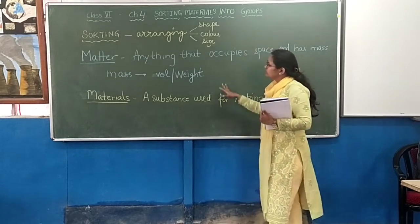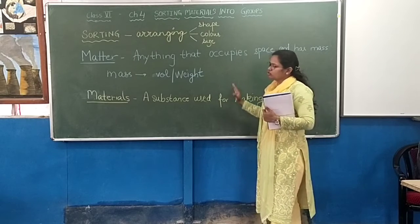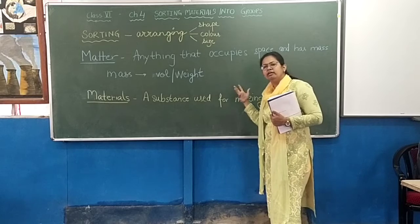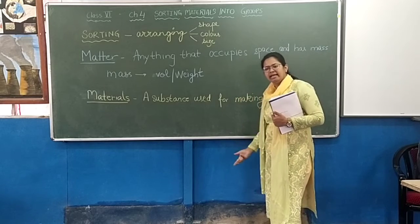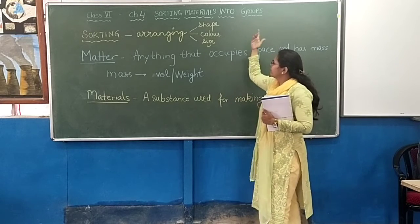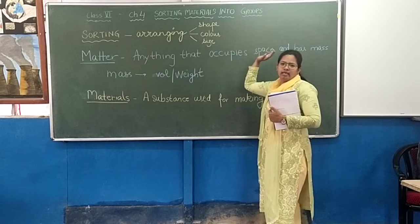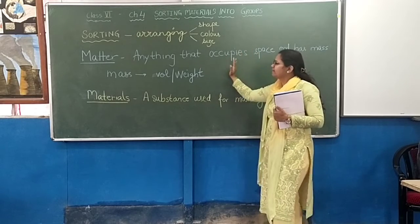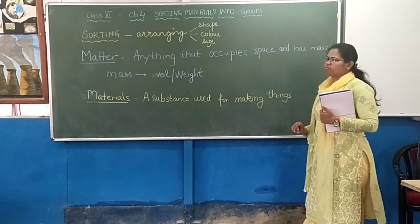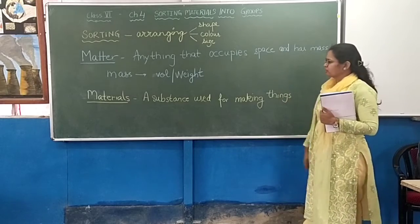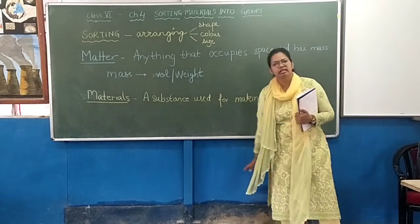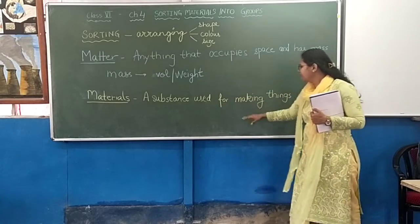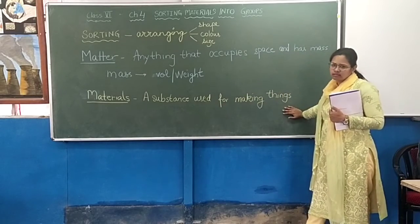So these are the three things we need to know. Sorting means arranging things based on different criteria — it can be shape, color, size, or weight. Then matter: anything that occupies space and has mass. And all matter is made of some kind of material, which is a substance used for making things.